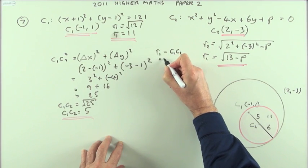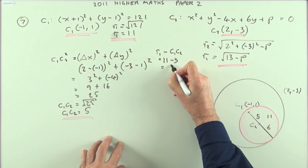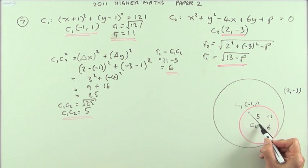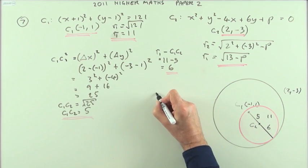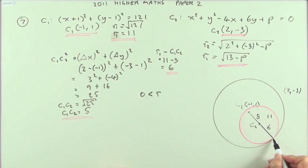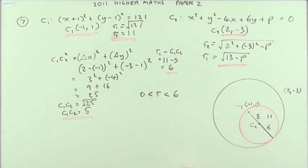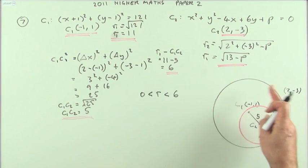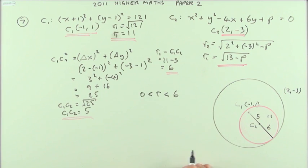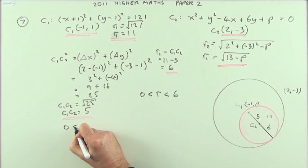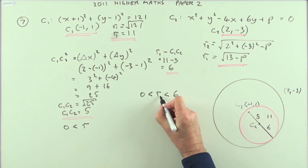r1 minus c1c2 = 11 − 5 = 6. So the range of values: the smallest circle must have radius greater than zero, and the largest must be just less than 6. Now solve this as two separate inequalities. For the first part, if r > 0, that means √(13 − p) > 0.